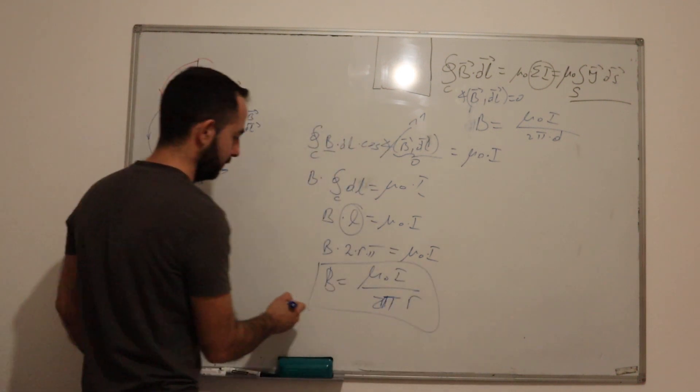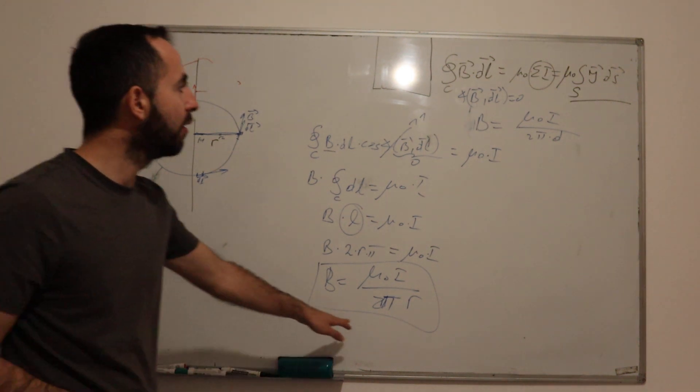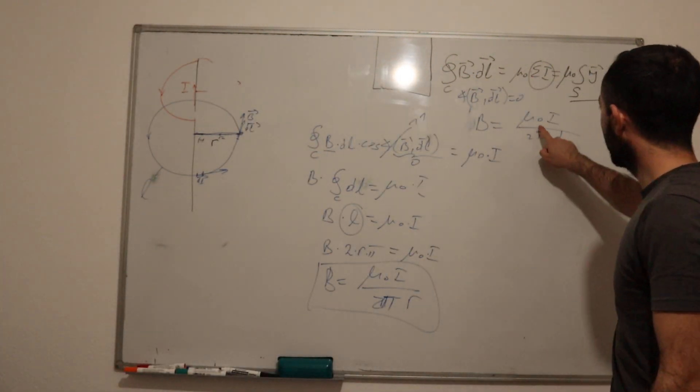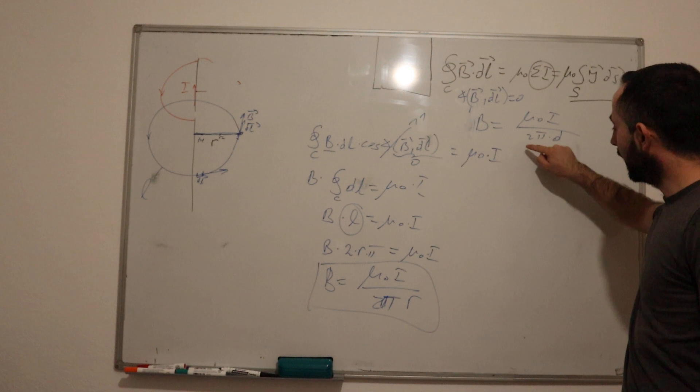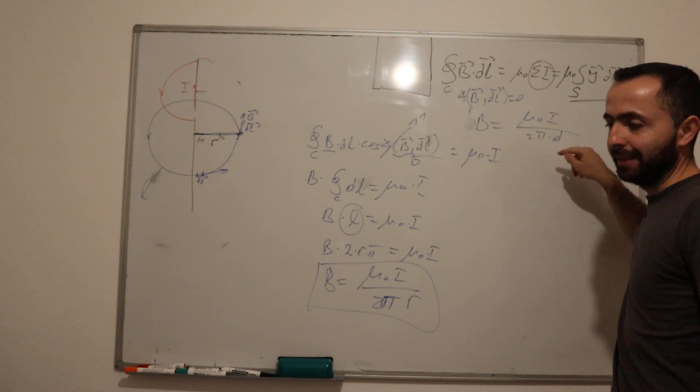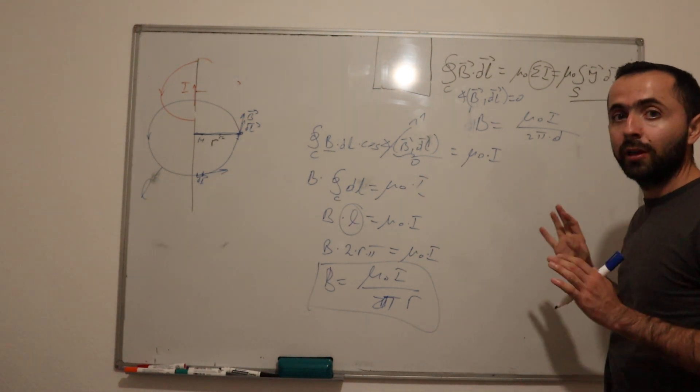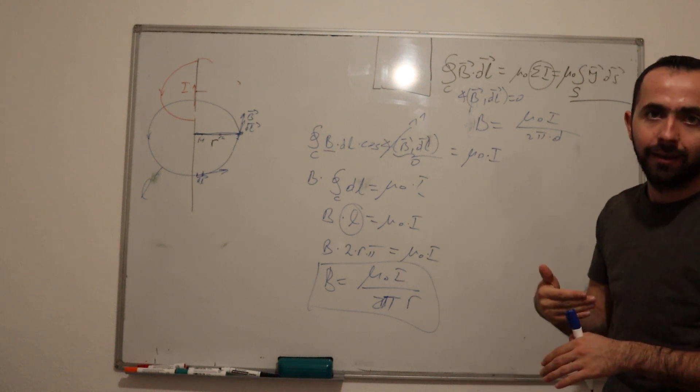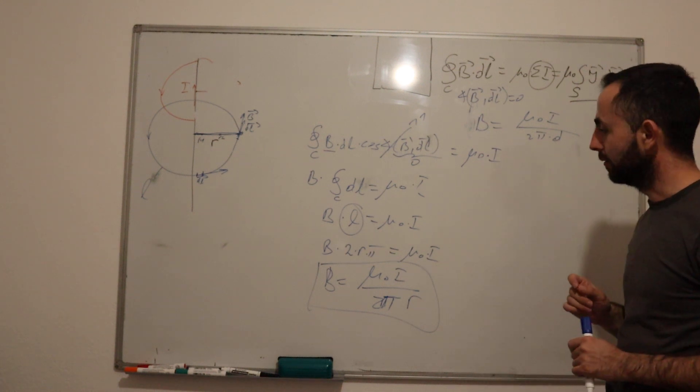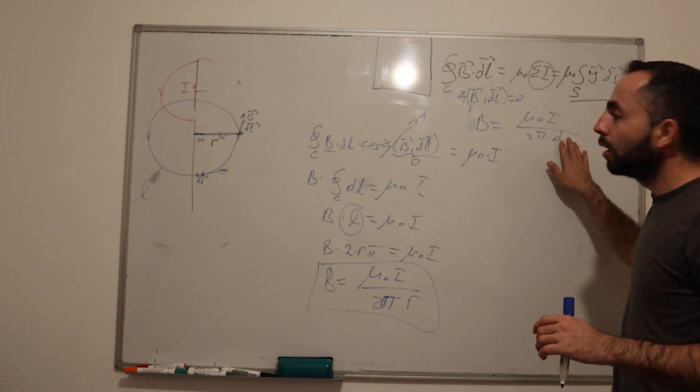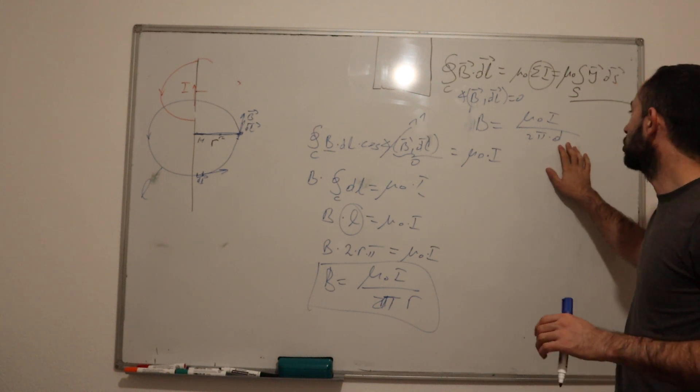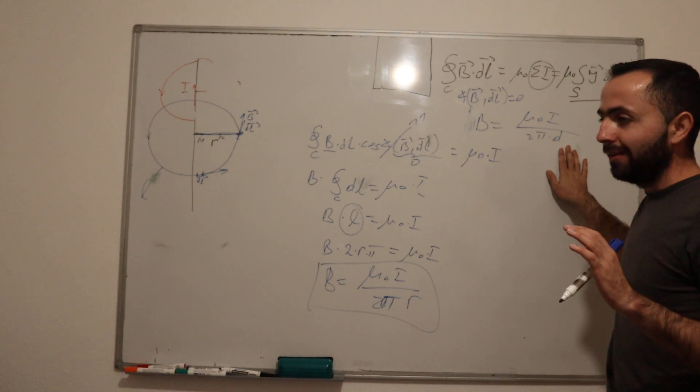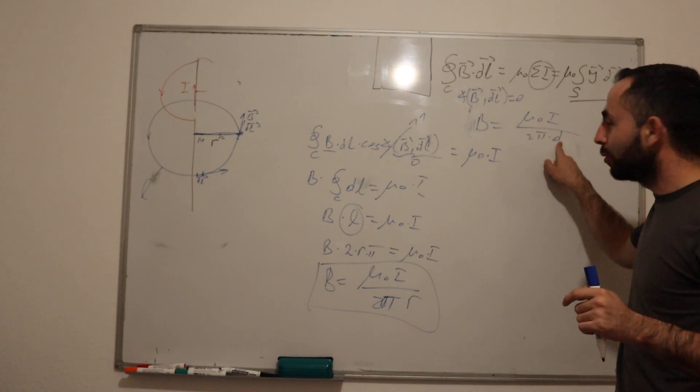What did we get? We got the same formula. Only here we used μ₀ times I divided by 2π times the distance, but we know that this is the distance. And we used D as notation of distance, but we also used X, we also used Y.